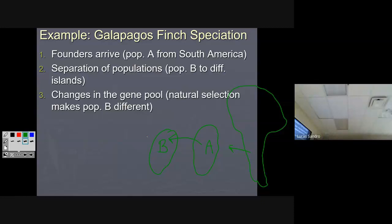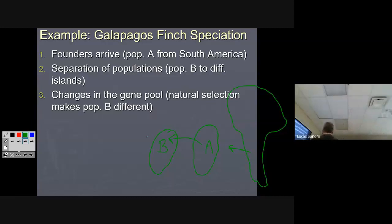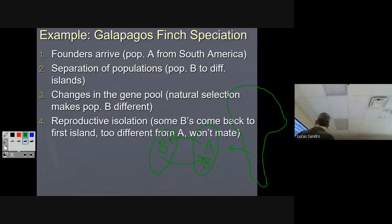Now we have a population B that has bigger beaks than population A. Birds are picky — they're not going to mate with just anybody. The dance or song has to be perfect; in this case, the beak has to be right. So when the B birds fly back to island A, now we've got some A's and some B's there. They won't touch each other — they're not going to interbreed. They prefer their own type of beak. We call that reproductive isolation.